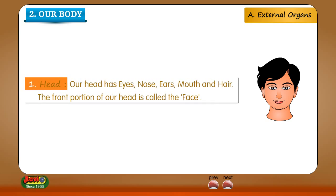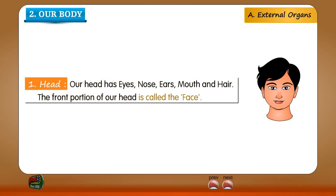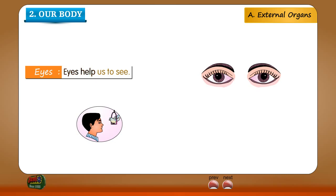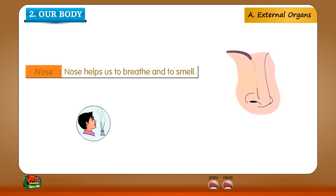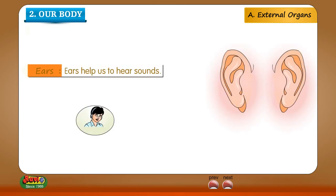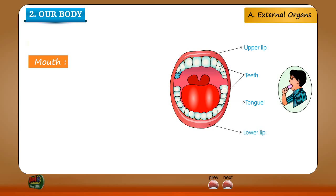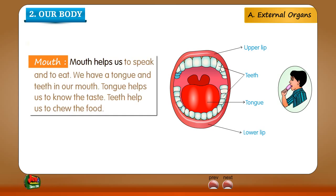Our head has eyes, nose, ears, mouth and hair. The front portion of our head is called the face. Eyes help us to see. Nose helps us to breathe and to smell. Ears help us to hear sounds. Mouth helps us to speak and to eat.